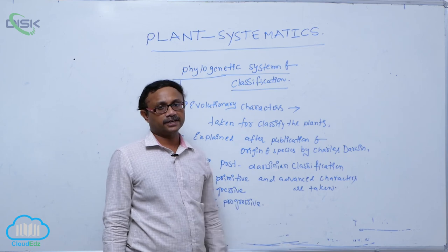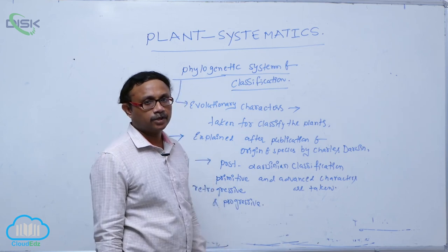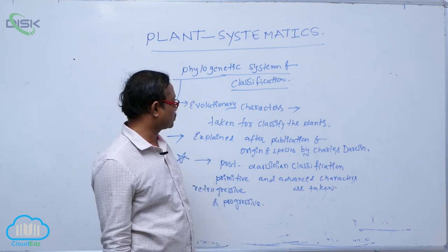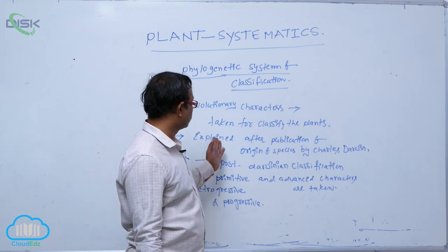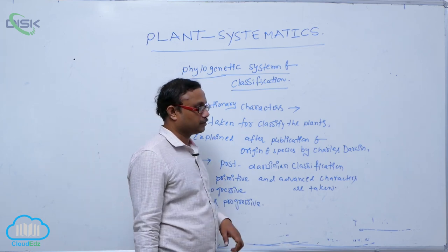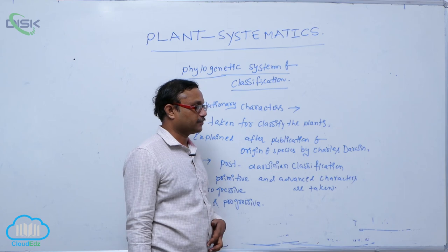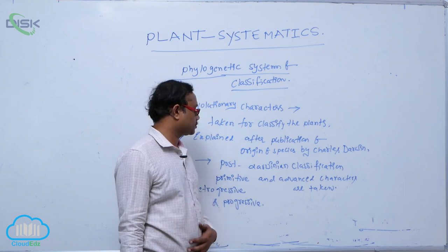Both retrogressive and progressive characters are taken for classifying the plants, and that is known as the phylogenetic system of classification.